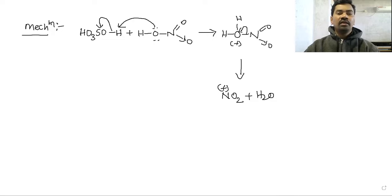Nitronium ion behaves like an electrophile. In this process, benzene pi electrons attack the nitronium ion. Step two.